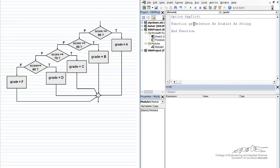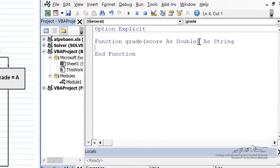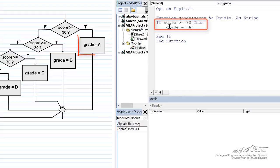So I create a module, I make my function grade. It has an argument of only score, just a single argument, and the function itself is going to be a string. It's either going to be A, B, C, D, or F. So if the score is greater than or equal to 90, grade equals A.